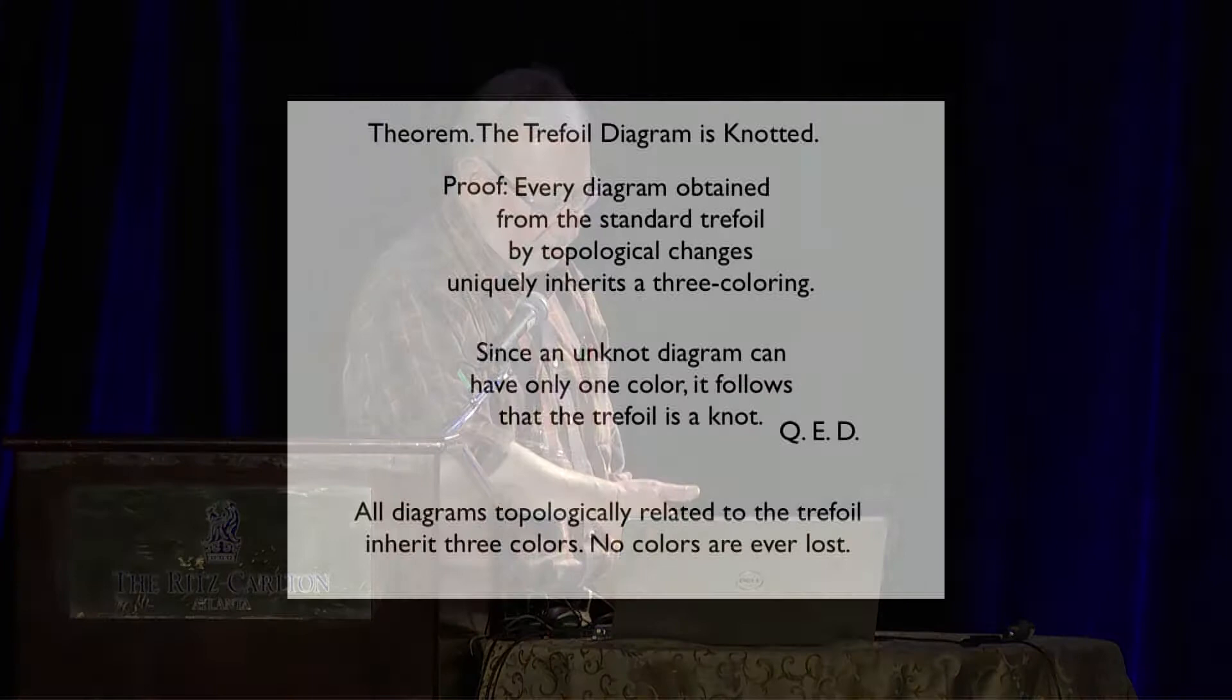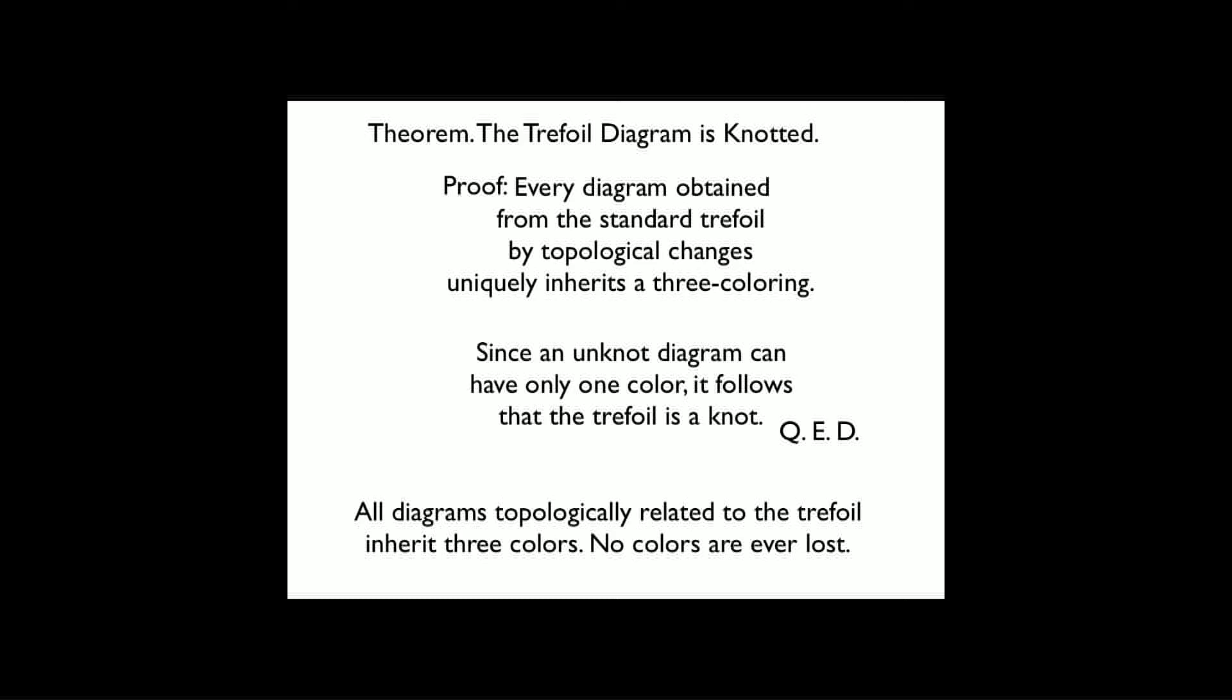For example, if you twisted it near the red, you would have one. That rule allows you to propagate the three-coloration over any representative of the trefoil knot and gives us the proof that the trefoil knot is knotted, because every diagram obtained from the standard trefoil inherits a three-coloring, but the unknot can only be colored with one color.